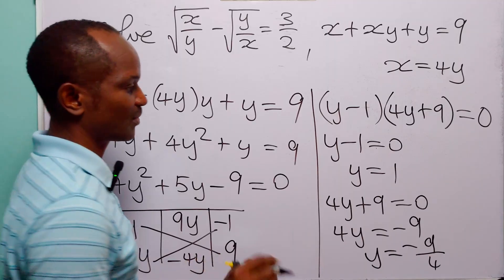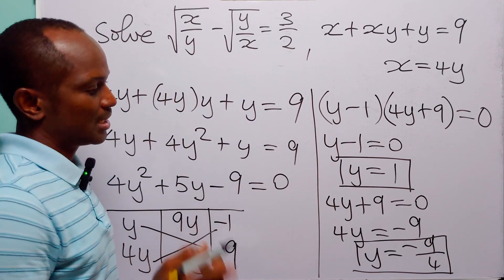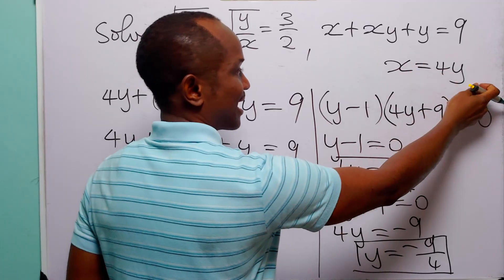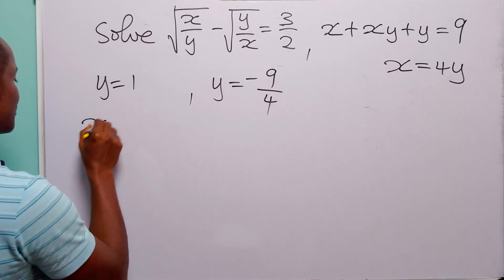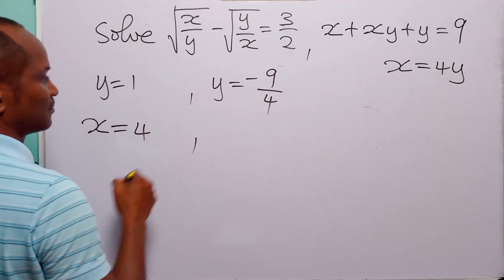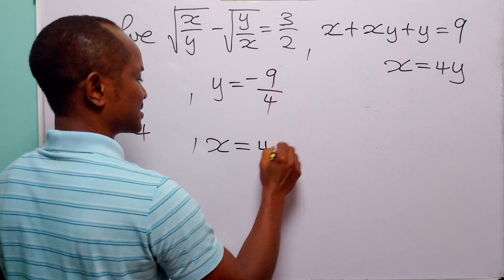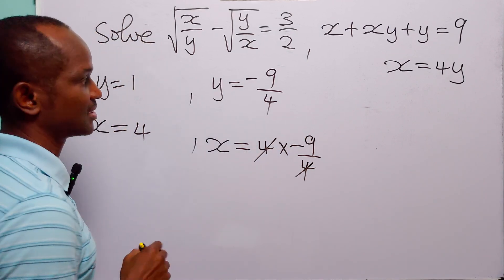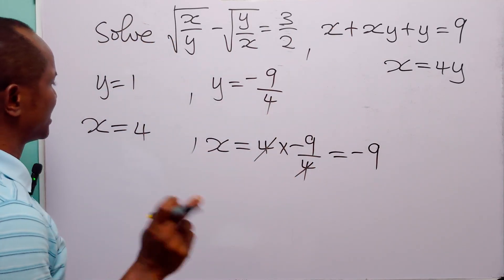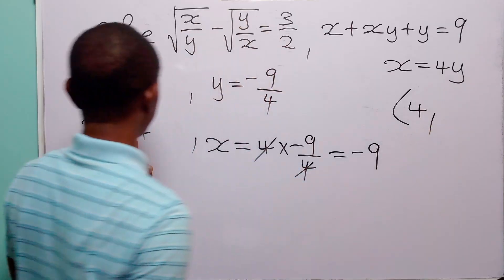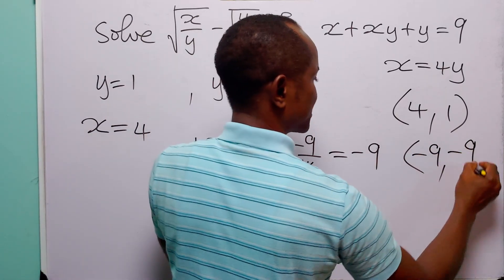We now have two values of y. Going back to x equals 4y: when y equals 1, x equals 4 times 1, which is 4. And when y equals minus 9 over 4, x equals 4 times minus 9 over 4, which cancels to give x equals minus 9. So we have two solution points: the first is (4, 1) and the second is (minus 9, minus 9 over 4).